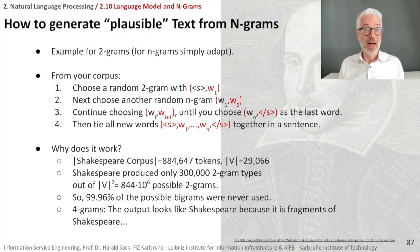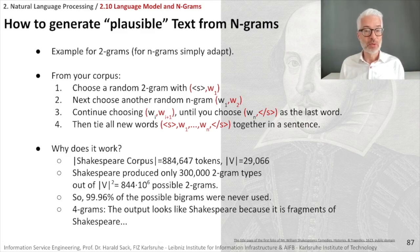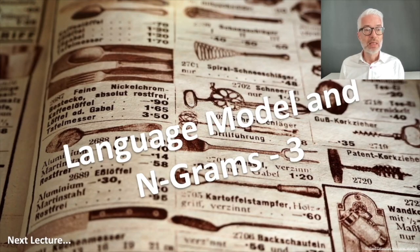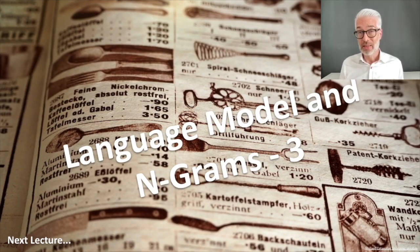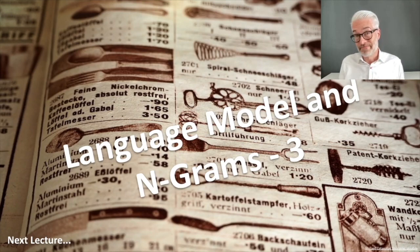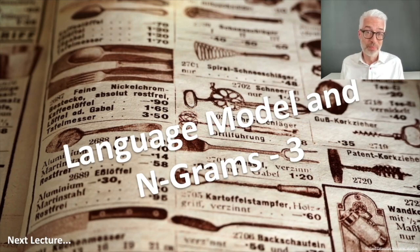That was an example of using an n-gram model for language generation. In the next part of the lecture, we will further refine the n-gram model and discuss what to do when words or n-grams don't appear in your corpus. If they don't occur, their probability would be counted as zero — so what do we do? Learn more about that in the next part of the lecture.